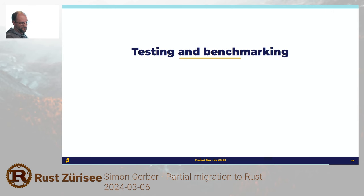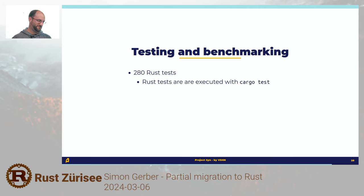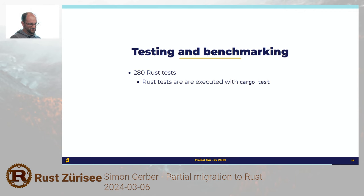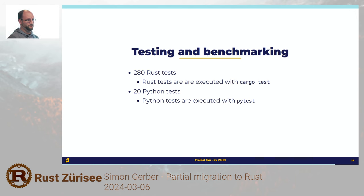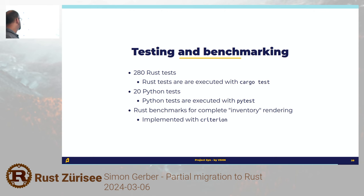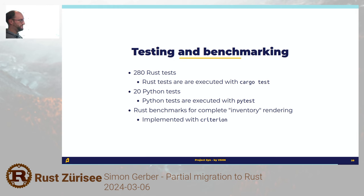A few words about testing and benchmarking. We have 280 Rust tests — some are generated with macros, most are written by hand. A lot of them use handcrafted test inventories stored as YAML files in the Git repo. We just run them with cargo test currently — I was looking at cargo nextest recently but haven't migrated yet. There are also a few Python tests that mostly exercise the Python API, using PyTest because that's what we're familiar with from Commodore. I wrote a couple of benchmarks with Criterion so we catch performance regressions — they run in GitHub CI, so accuracy is so-so.